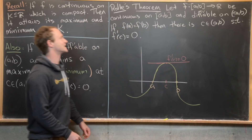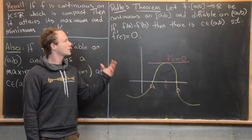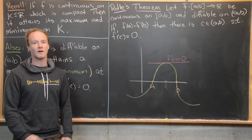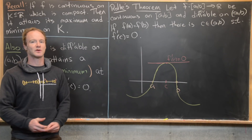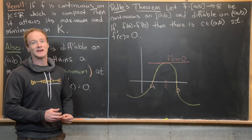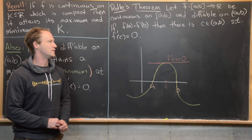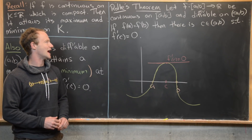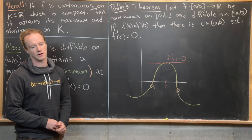Let's look at the statement of Rolle's theorem, which is the first thing we'll prove. We want to suppose that F is continuous on the closed interval [a, b] and differentiable on the corresponding open interval (a, b). We'll show that if F of a and F of b are the same value, then there exists a C in (a, b) such that F prime of C is equal to zero.